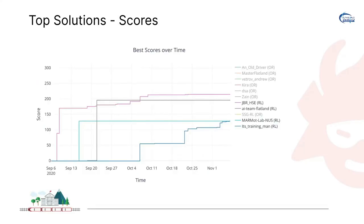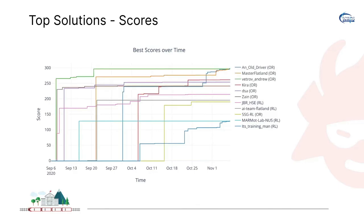Looking at the top solutions of the previous competition: the top RL solutions are close to a score of 200, which is not as good as the top OR solutions but much more progress than anticipated within just a year. The top OR solutions are really fighting it out, and because the progress is harder and harder towards the top, these OR solutions are way ahead of the RL solutions currently.